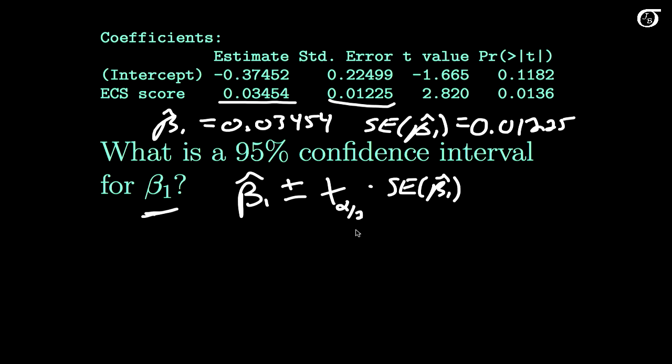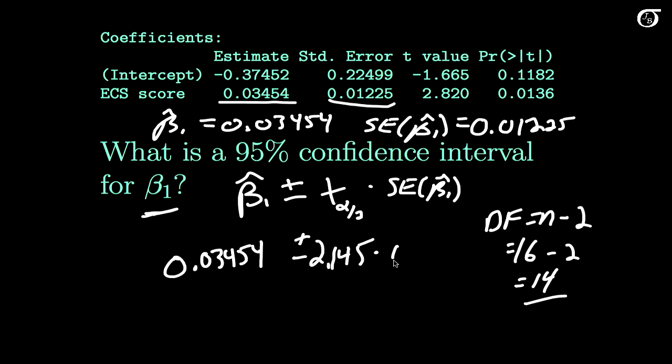But we could go to a table or a computer and get that. We need the degrees of freedom, and our degrees of freedom in simple linear regression are n minus 2. We had 16 observations, and so we have 14 degrees of freedom. If you run off to your t table and find the appropriate t value, we will find that that is 2.145. Our beta 1 hat is 0.03454 and our standard error is 0.01225.